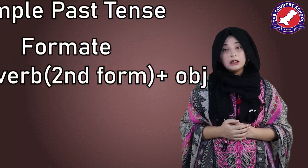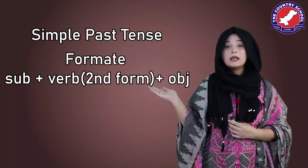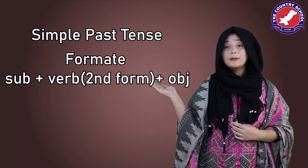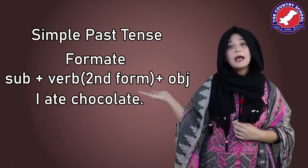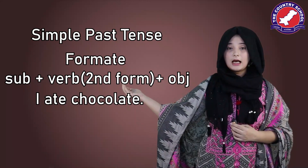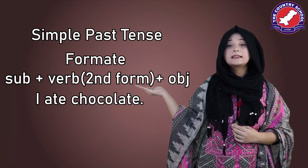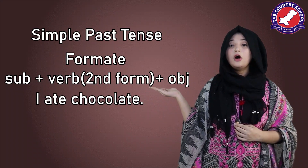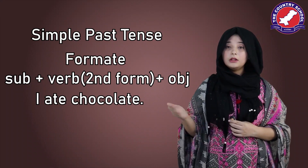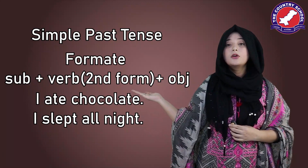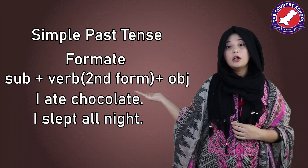As we all know, we have already studied simple past tense. It is used to describe an action that happened in the past. The format for simple past tense is: subject plus verb in second form plus object. For example, 'I ate chocolate' — here the subject is 'I', 'ate' is the second form of the verb, and 'chocolate' is the object. Another example: 'I slept all night.'